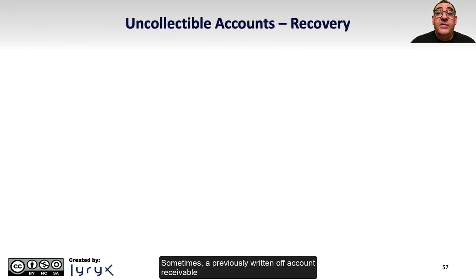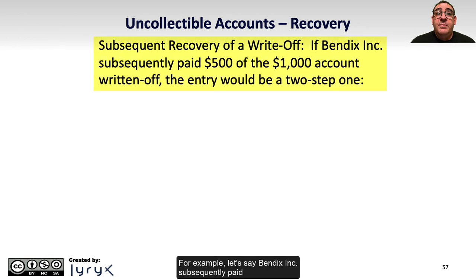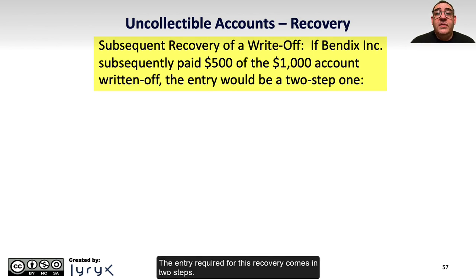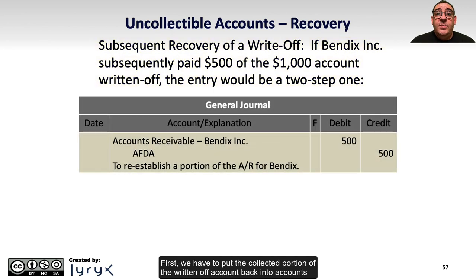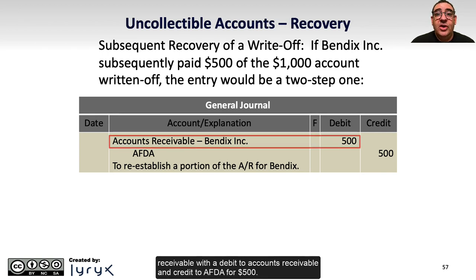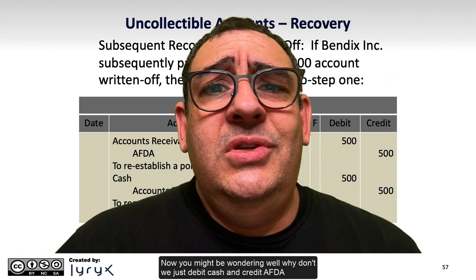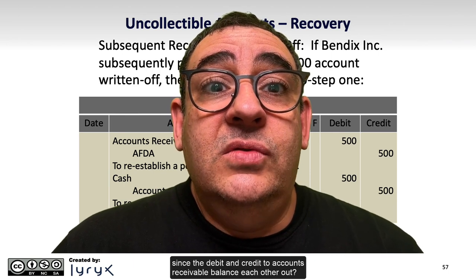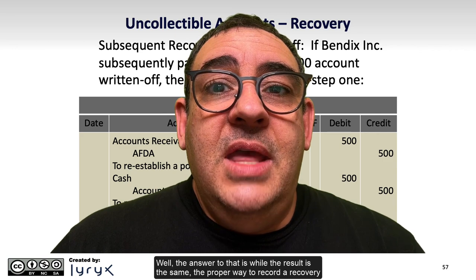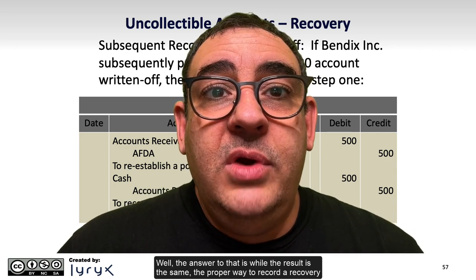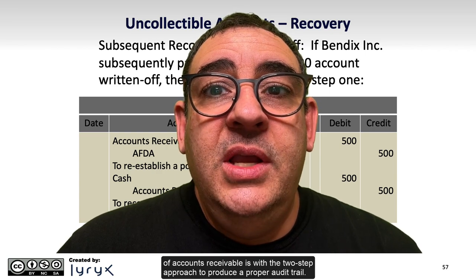Sometimes a previously written-off account receivable can be fully or partially collected — this is called a recovery. For example, if Bendix, Inc. subsequently paid $500 of the $1,000 written-off account, the recovery is recorded in two steps. First, put the collected portion back into accounts receivable: debit accounts receivable and credit AFDA for $500. Then record the collection: debit cash and credit accounts receivable for $500. The two-step approach is used rather than simply debiting cash and crediting AFDA, because it produces a proper audit trail.